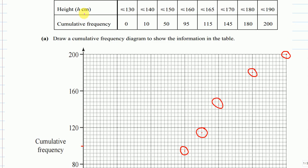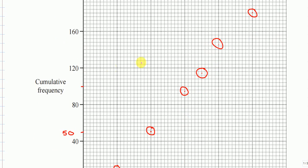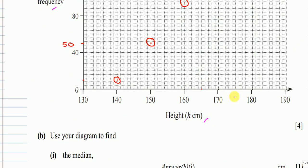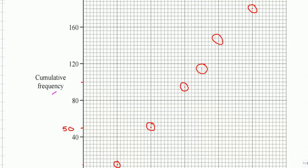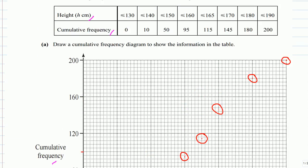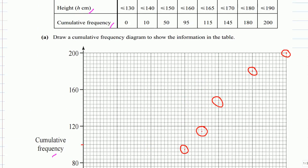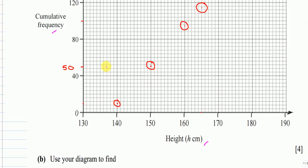Before we go forward, we always check what we are given. The table has height and cumulative frequency, and the grid also has cumulative frequency and height. So we do not need to convert anything — we can directly plot. The first point is simple: height 130 at cumulative frequency 0.